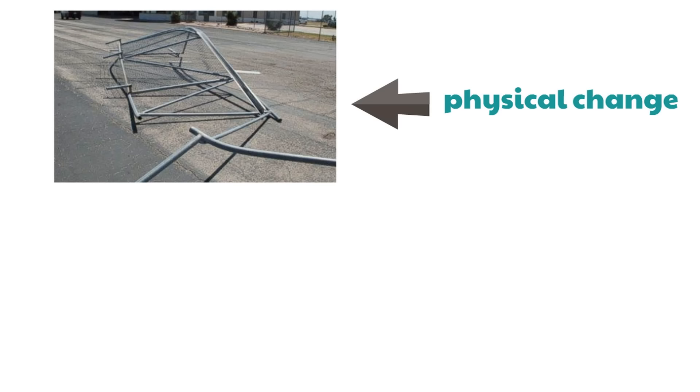Here we have a picture of a metal gate that has been knocked down and it looks like it's bent — maybe it got run into by something really large. This gate has been broken. Is that a physical or a chemical change? Remember, with physical change the type of matter doesn't change, but with a chemical change it does. This is a physical change — it's knocked down, but it hasn't changed the type of matter, so it's a physical change.